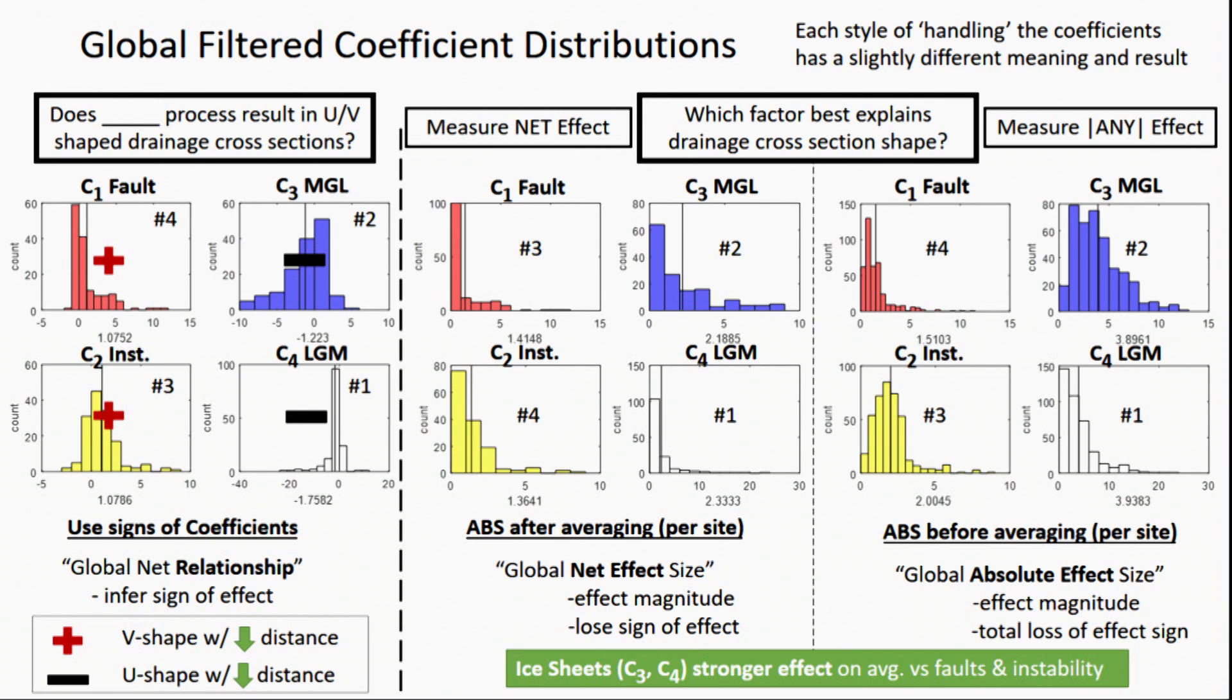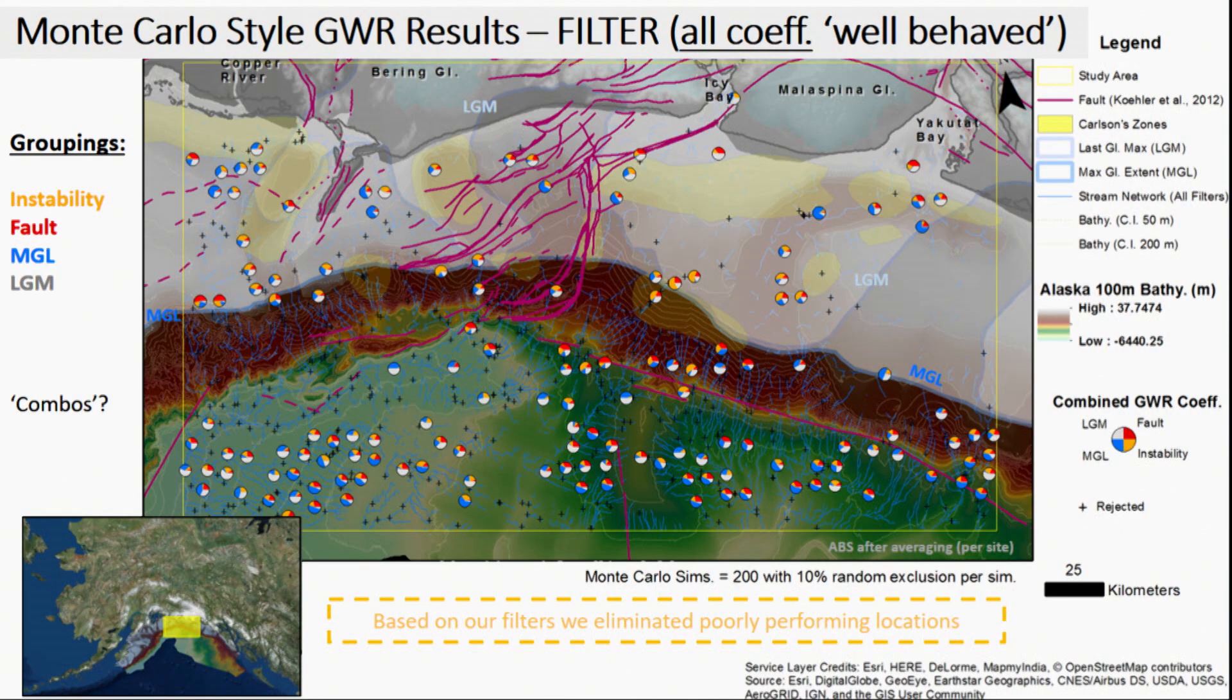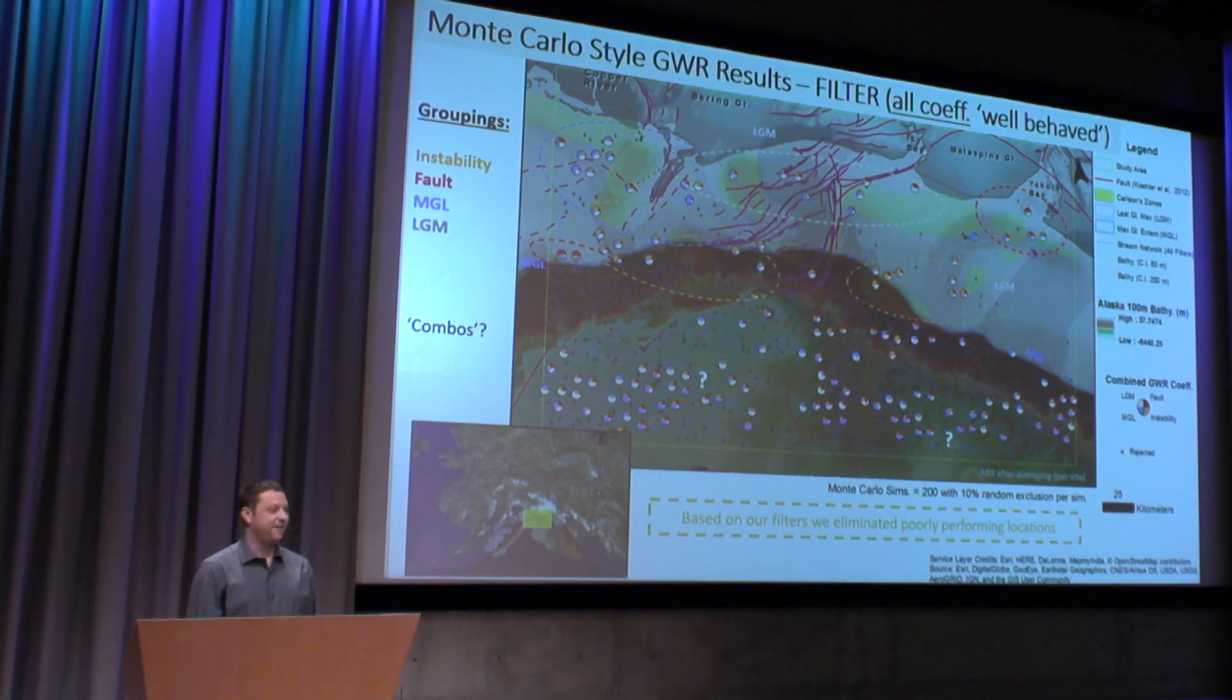We can also look at the magnitudes. But what we really want to do is look at the map, right? We've plotted the pie diagram here where we were able to rank each coefficient. The orange is instability, the red here is faults. Depending on which has a bigger slice, we can attribute an effect on the shape index of the channels to that process. We see some clustering here. This is pretty much what we use as our interpretation. We have some areas where the instability is the main contributor, and we have some areas where faults better explain the variation in shape index.